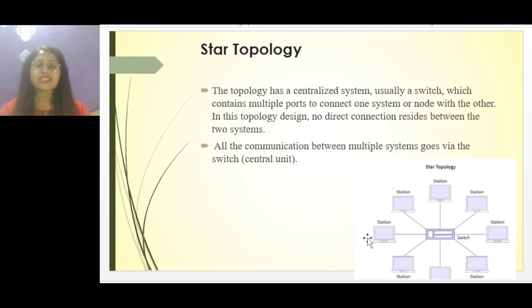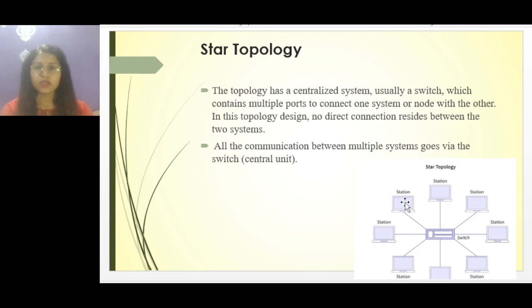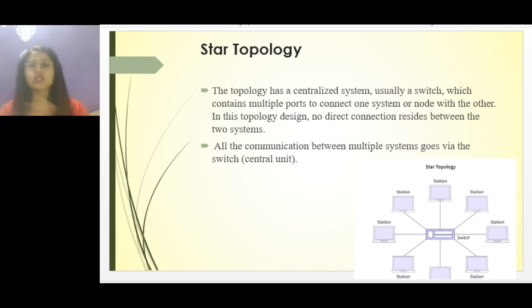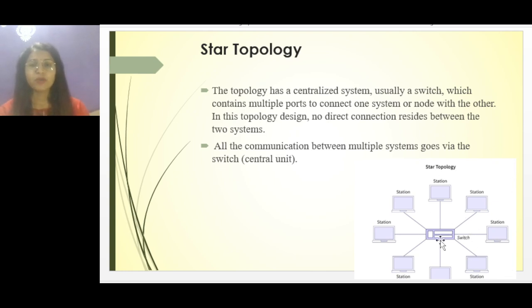What are the advantages of star topology? First, there is no data collision. It is highly reliable because of the design, and fault detection is easy — if information is not flowing from a system it can be easily detected. If one system fails it will be easily recognized and will not affect all other systems. It is also less expensive, as the main cost is just the switch.